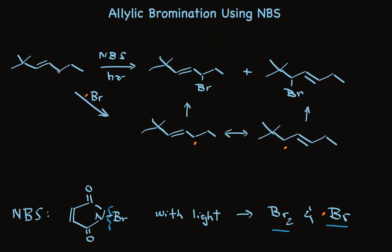We can picture reaction at the allylic position, using our arrow pushing to track bond formation — with this electron contributing and one of these electrons contributing, and the other one of these electrons remaining at the allylic position. This forms an allylic radical, which has two resonance structures.